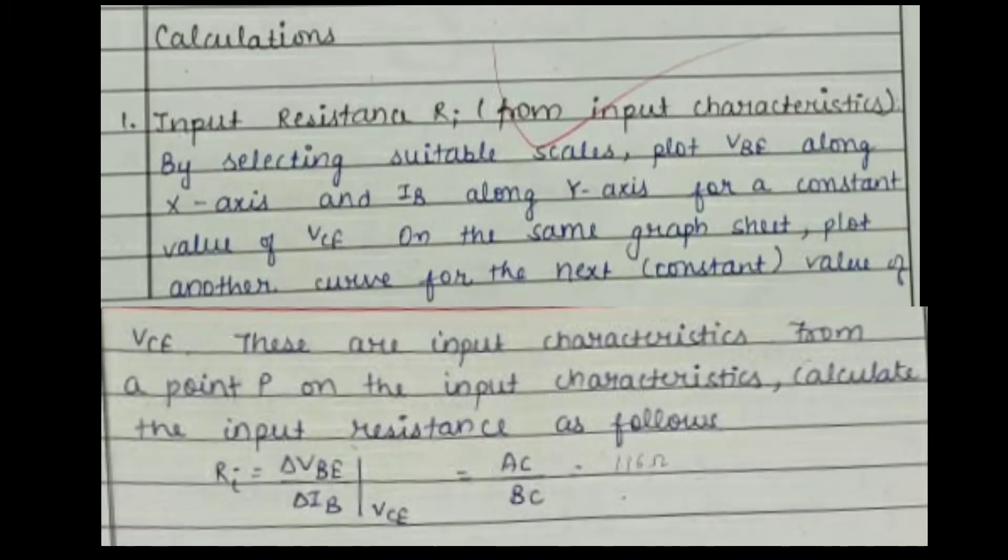This image shows the calculations that are going to be performed for finding out the result. It is basically for input resistance, output resistance, voltage gain, and current gain—the same that you have seen in the procedure. Watch these calculations carefully. The next upcoming images are also going to be based on the calculation parts only, so don't get confused.